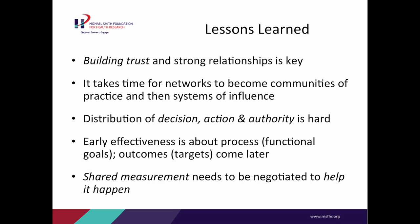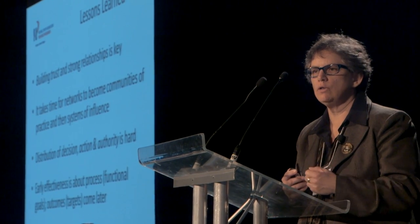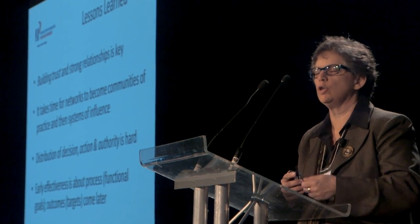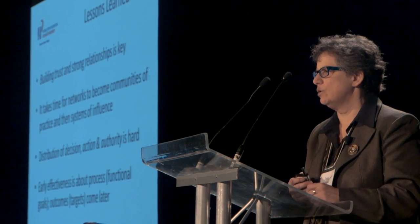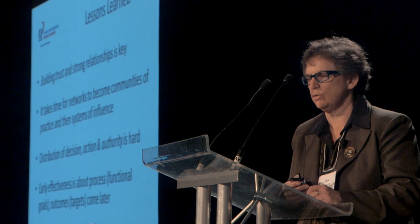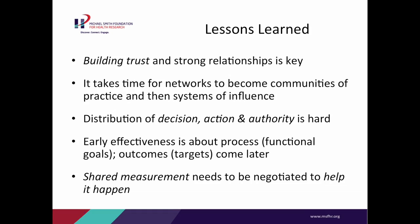Early on, effectiveness is really about the effectiveness of the process — our functional goals. Later on, it'll be about outcomes and targets. But it's hard for a system to recognize that process targets are just as valuable, and more valuable early on, than outcome targets. Outcomes take time, especially when dealing with frail elderly and complex chronic conditions. Shared measurement needs to be negotiated — we need to help it happen through networking and other mechanisms. It's one way to really understand how context matters when making progress around integration on the ground in different communities.